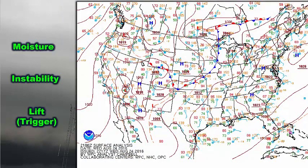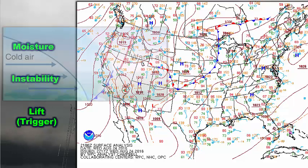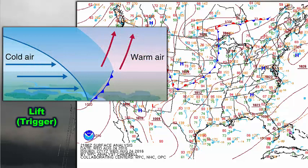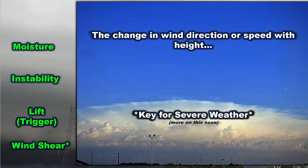Next, we need a source of lift or trigger. Typically that comes in the form of a surface front — a stationary, warm, or most often a cold front. In this case we have a cold front extending from the arrowhead of Minnesota back towards northeastern Kansas into far northwest Missouri. Cold, dense air sinks to the bottom and forces warm air up and over, making a cold front one of our best sources of lift for thunderstorm development.